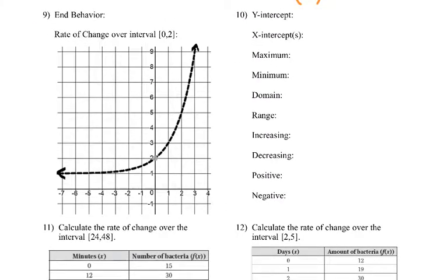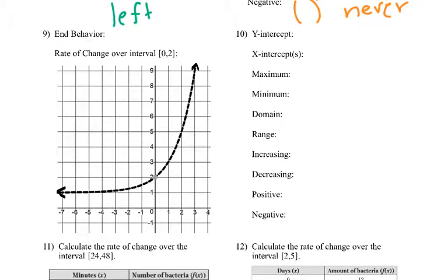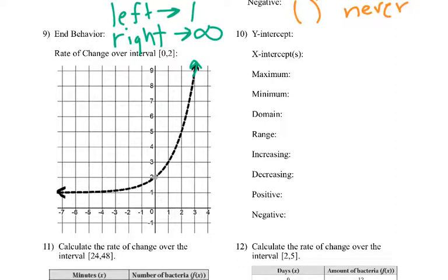Now it looks like we have a dotted line, but it does look exponential, so let's attack it. End behavior — going left, remember exponential functions have that asymptote. Looks like the asymptote is at 1, so it never reaches 1 but that's what it's approaching. As we go right, it looks like it's just going to keep going up and up — so we call that infinity. This one doesn't have a maximum or minimum because it keeps getting so very close to 1 but never stops.